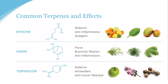Terpinolene is found in fragrant plants including nutmeg, tea tree, apples, and lilacs. It has a piney, floral, and herbal flavor profile, and because of that it's often used in soaps, perfumes, and lotions. Terpinolene has been shown to exhibit antioxidant and anti-cancer effects in rat brain cells — though these are very early, preliminary studies in mouse models. Studies with mice also show that terpinolene has a sedative effect when inhaled.